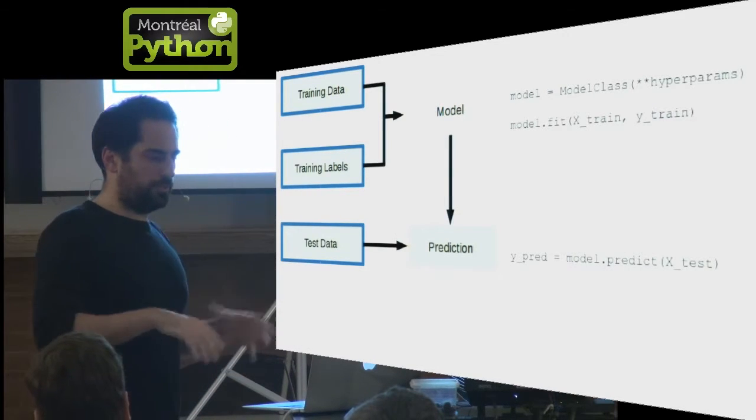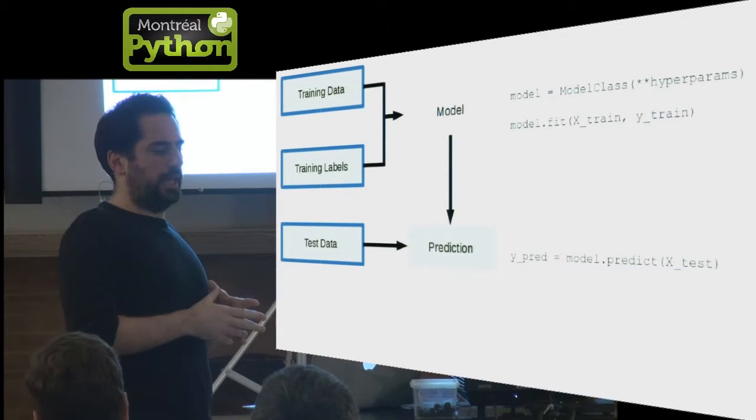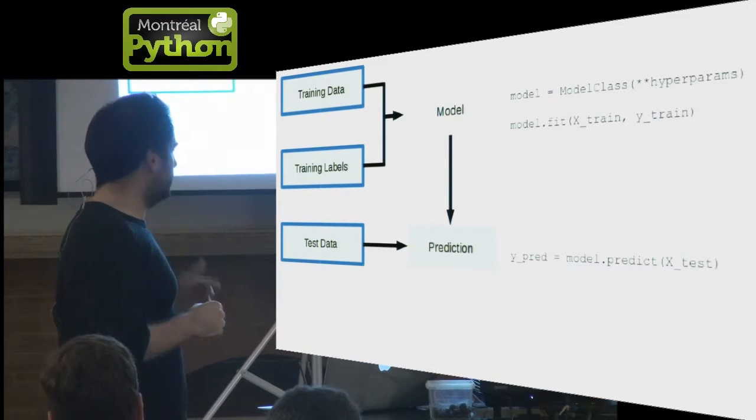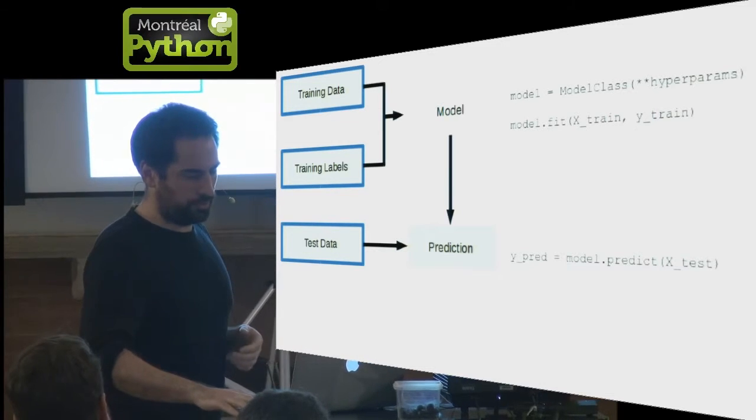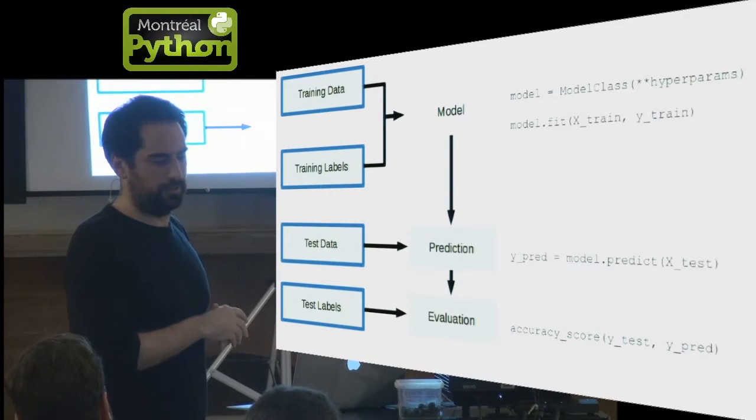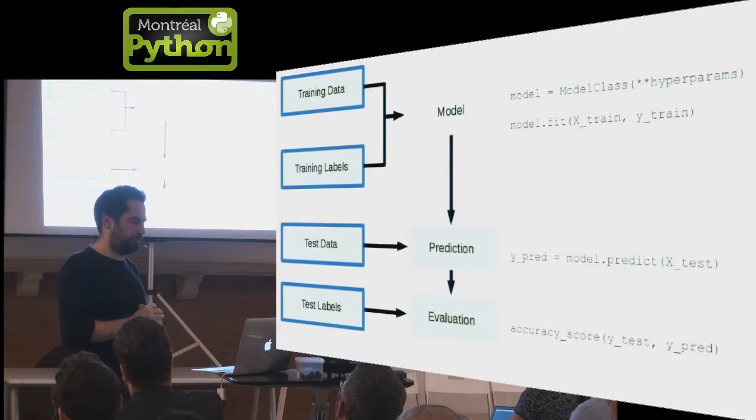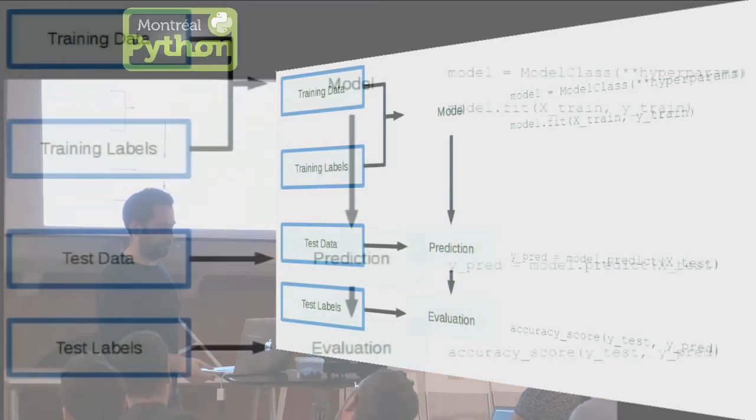Then the model updates its internal parameters from the data and it's able to make predictions on new data, test data, and produce some prediction. And in general, you want to know whether or not you're predicting something that is better than chance. So you want to compute the accuracy of your prediction by comparing them to ground truth test labels that you manually annotated, for instance.